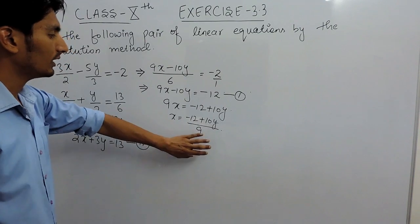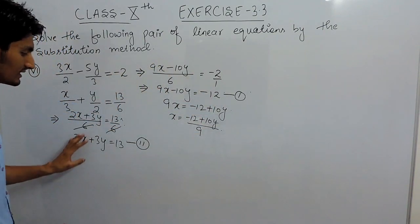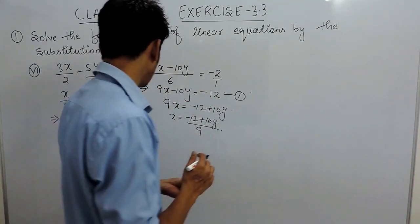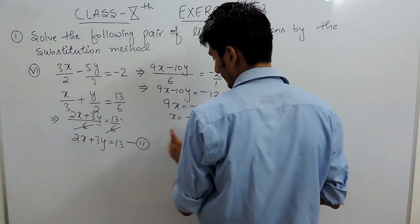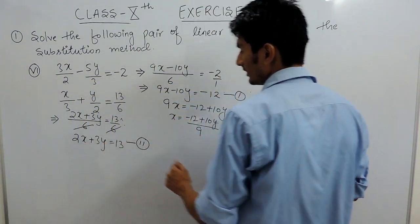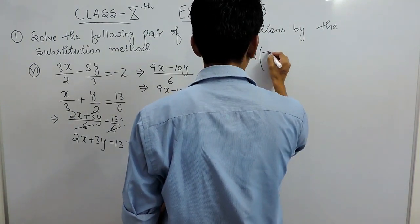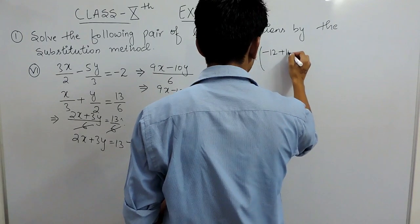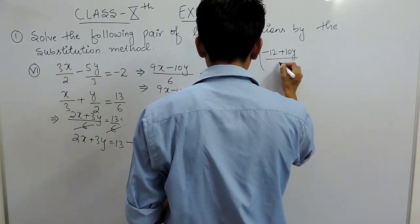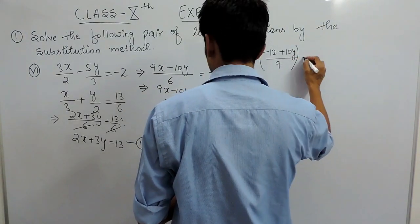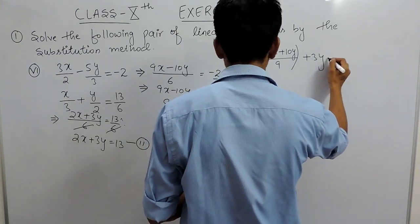Now what you have to do is you have to substitute this value into second equation. Now I am replacing x with this value in this equation, so our equation becomes 2 into minus 12 plus 10y whole upon 9 plus 3y equals to 30.